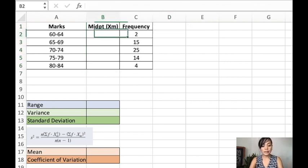The midpoint here is 62, 67, 72, 77, and 82.